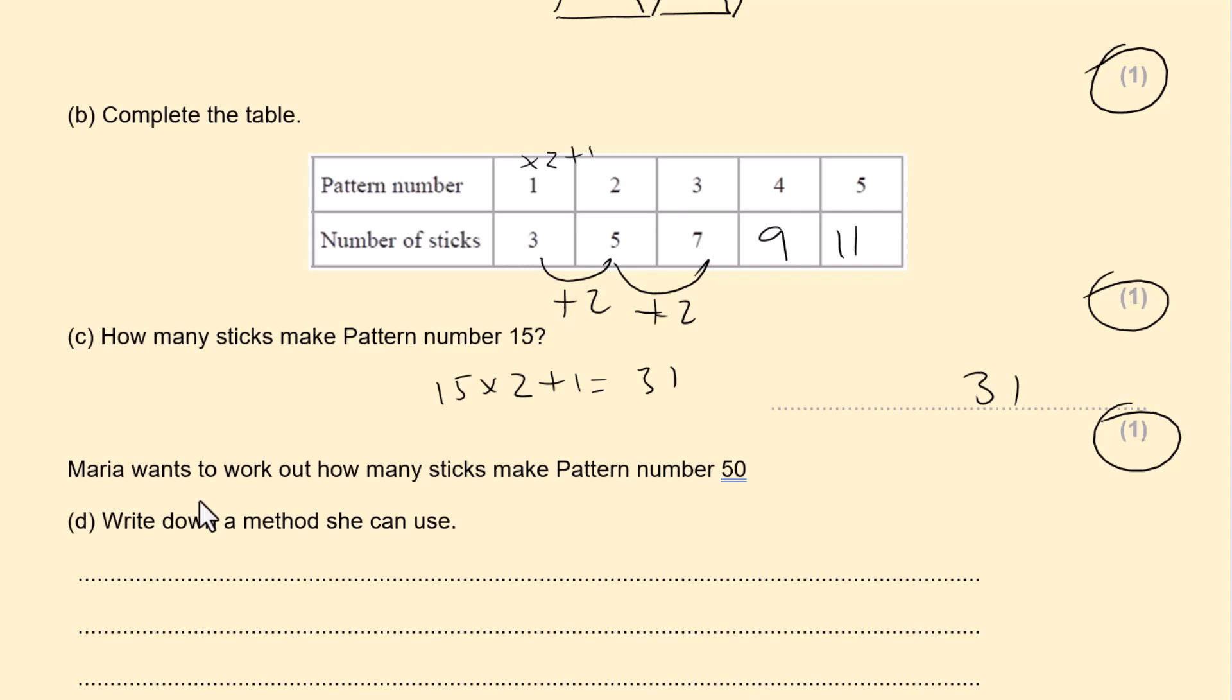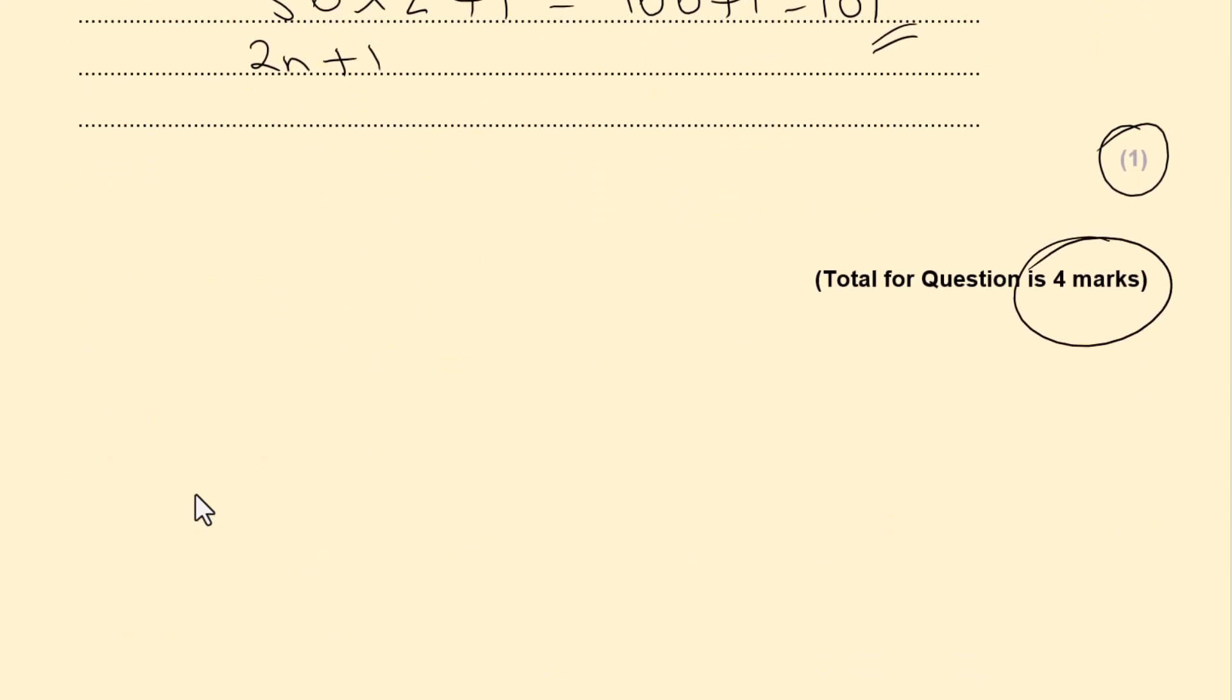Maria wants to work out how many sticks make pattern number 50. Write down the method she can use. So she can multiply the 50 by 2 and then add 1 which is 50 times 2 is 100. Add 1 which is 101. So 2n plus 1 is the rule as well if you find the rule. And this is worth one mark. Altogether four marks.